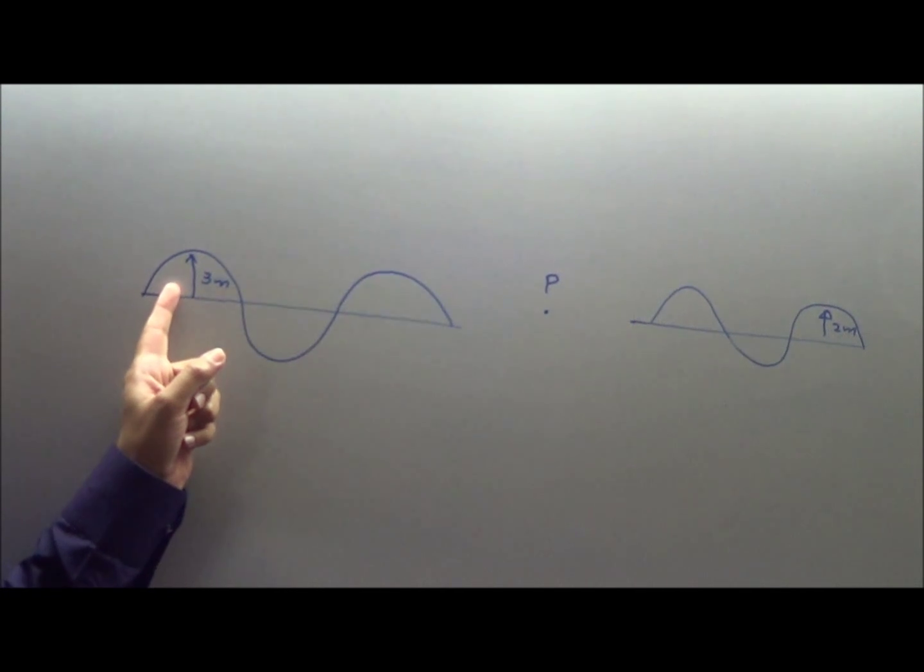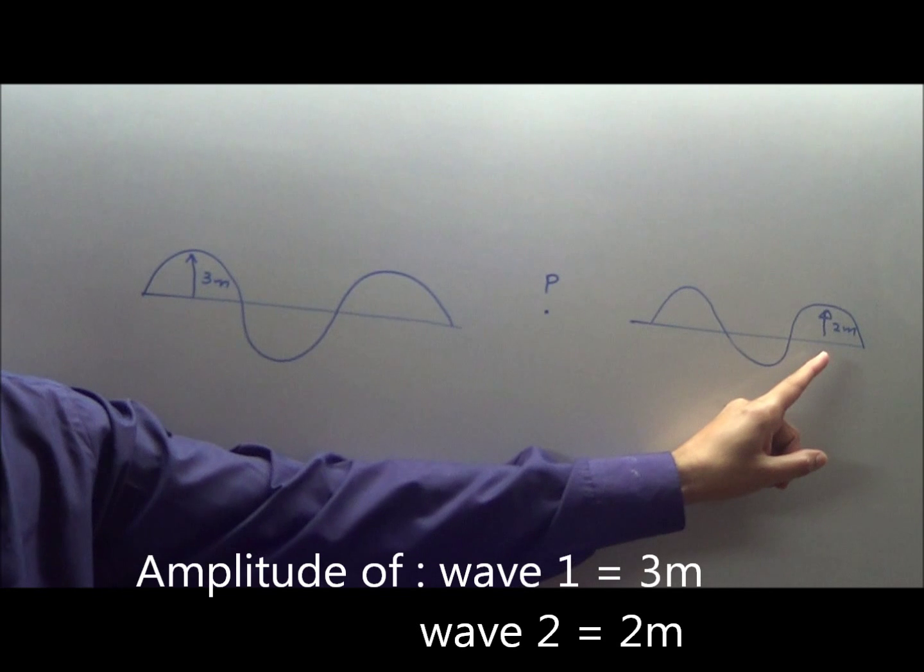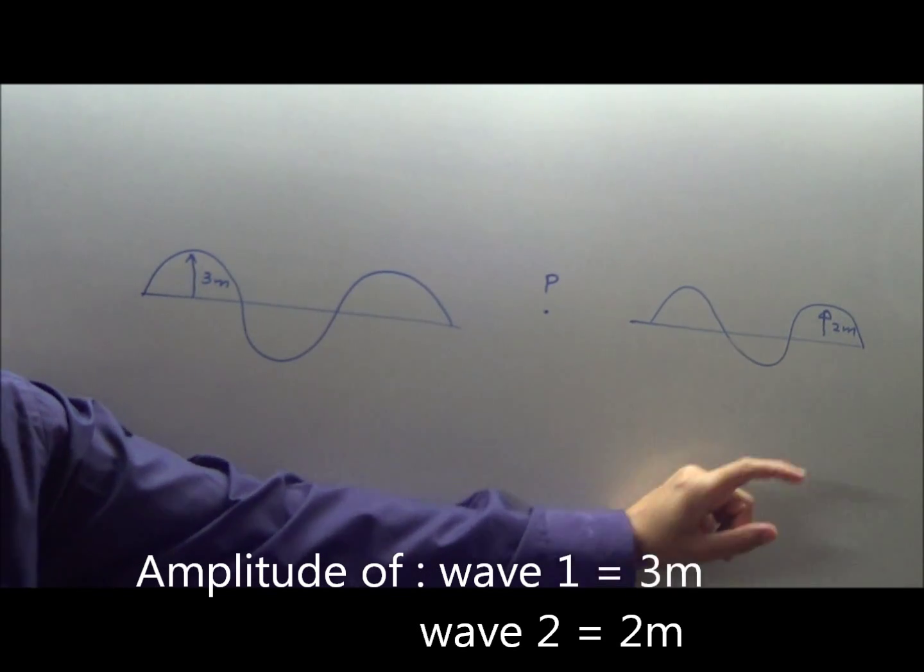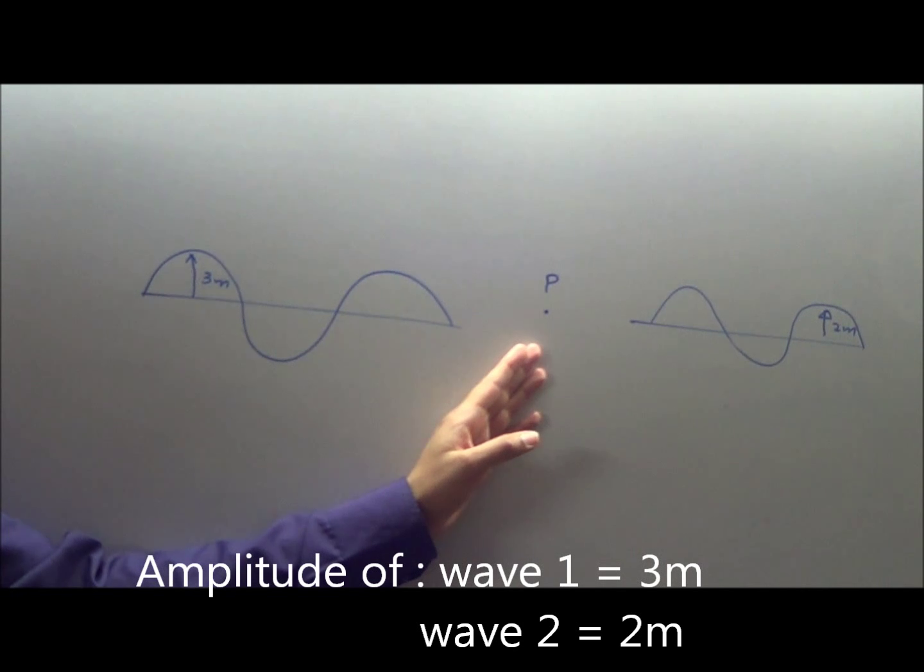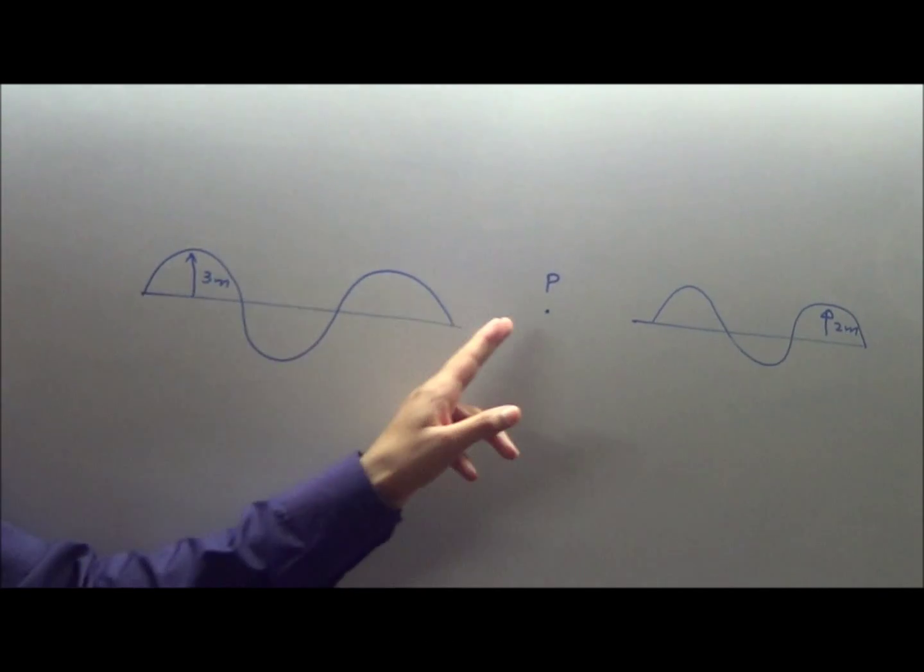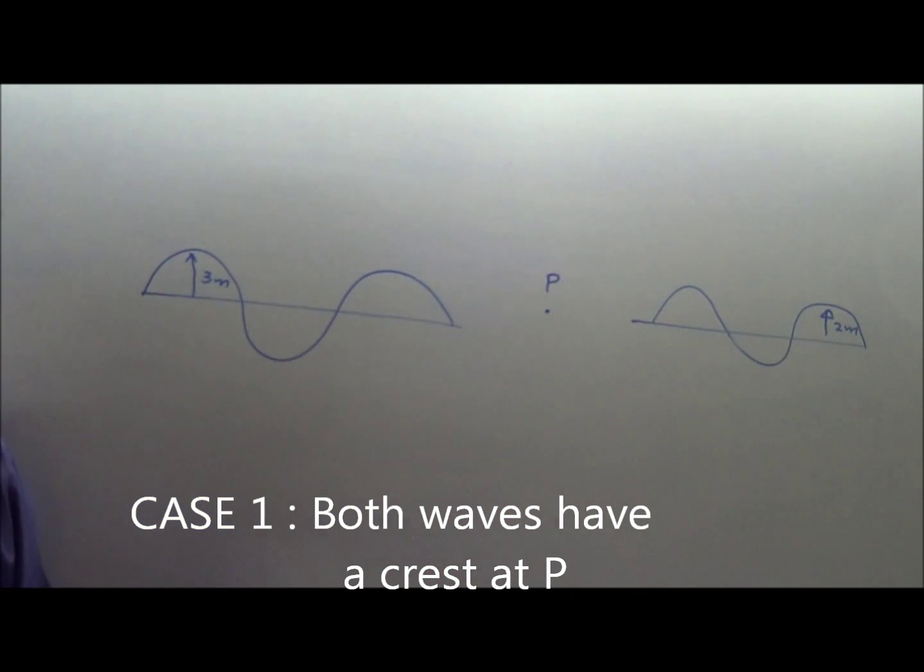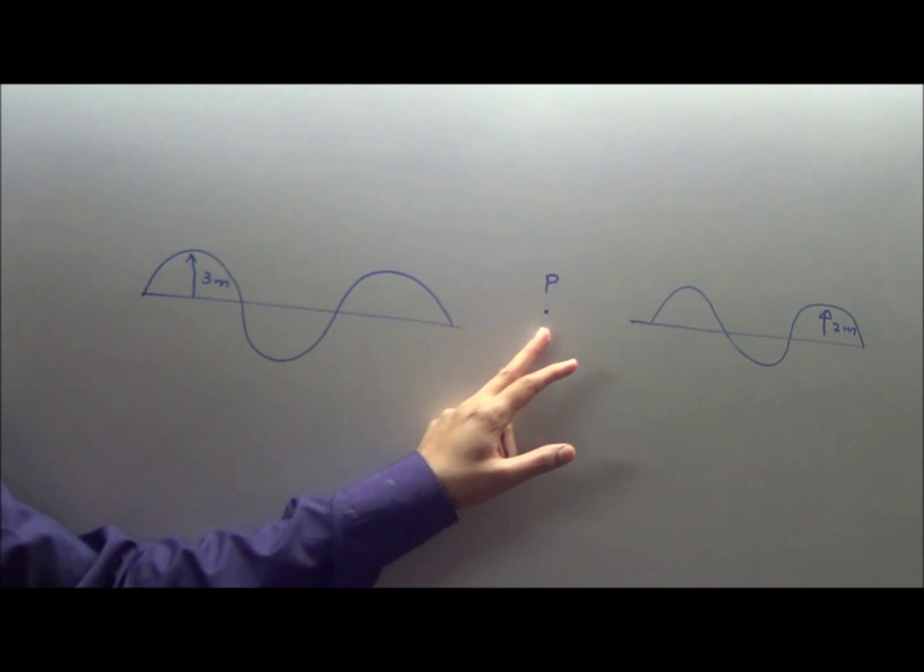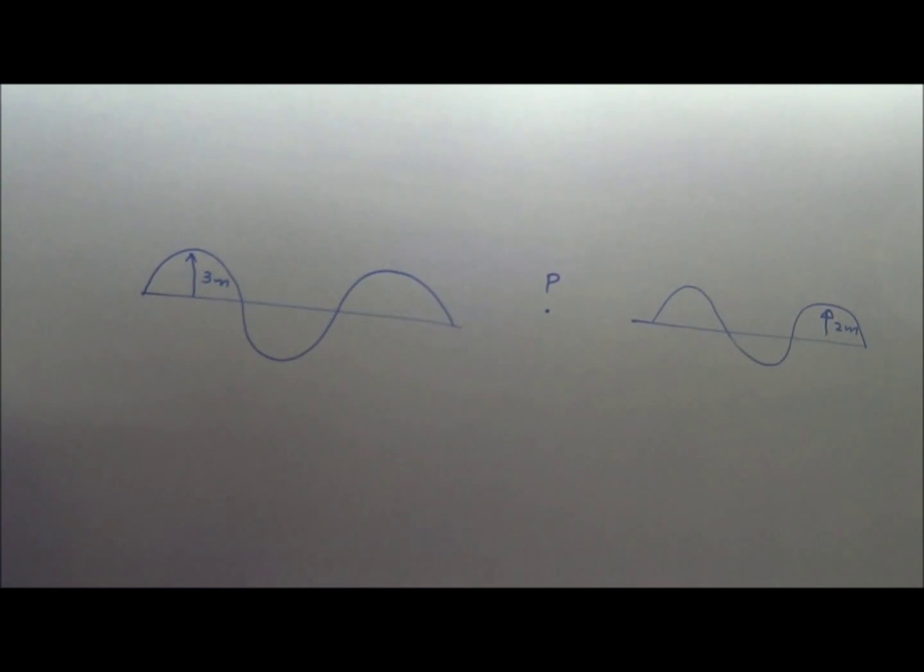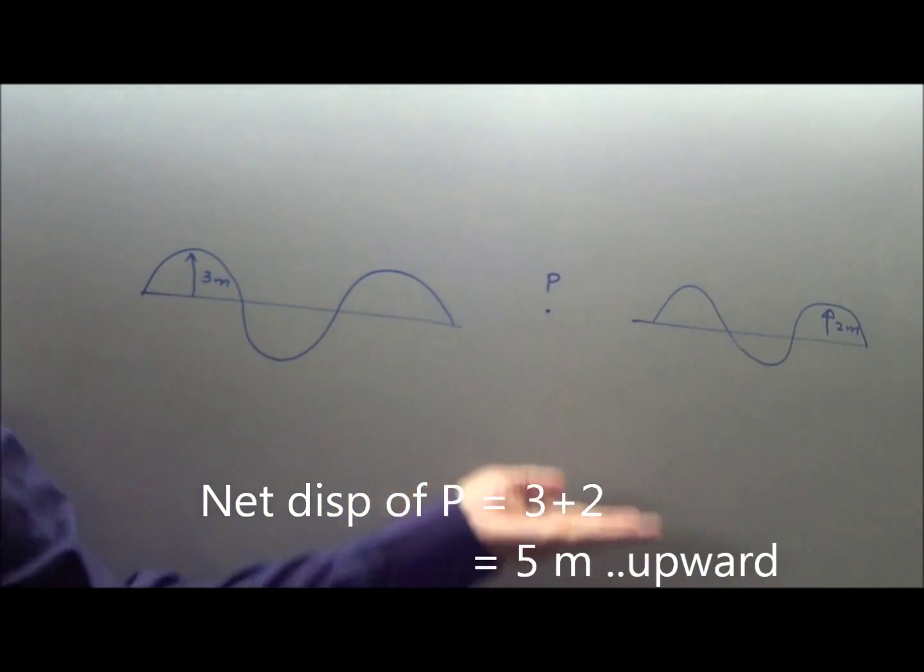If amplitude of wave 1 is 3 meters and amplitude of wave 2 is 2 meters, and let's assume wave 1 has a crest at P, then wave 1 will push P upwards by 3 meters. At the same time, if wave 2 has a crest at P, P will be pushed up by 2 meters by wave 2. Net displacement of point P will be 3 plus 2, 5 meters up.